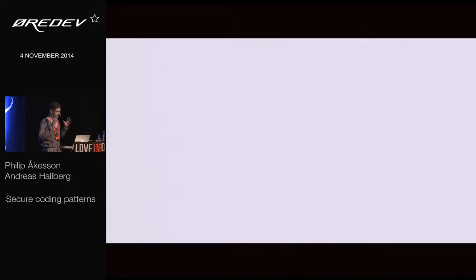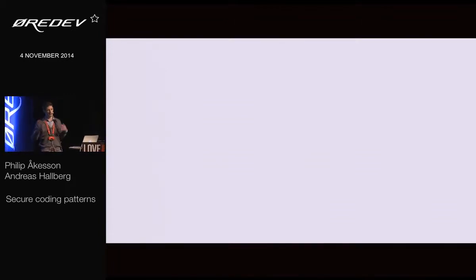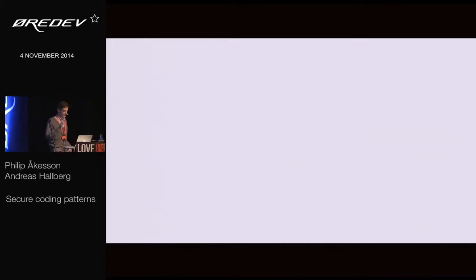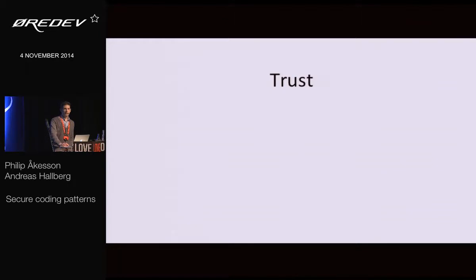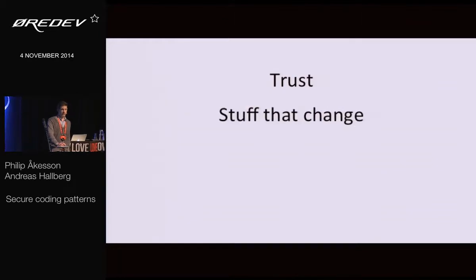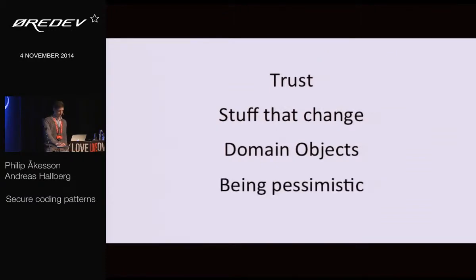We're going to focus this, boil it down to four main concepts today. We're going to talk about trust. We're going to talk about things that change. We're going to talk about domain objects. And finally, about being pessimistic.